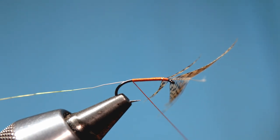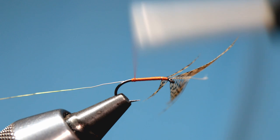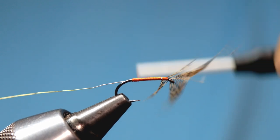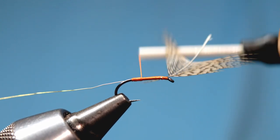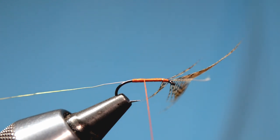And now we take our silk again in tight touching turns back up the hook shank to a point just short of where we mounted in the wire.